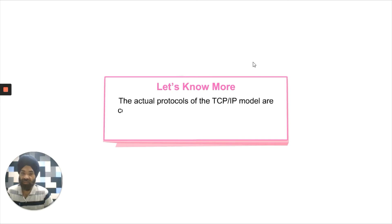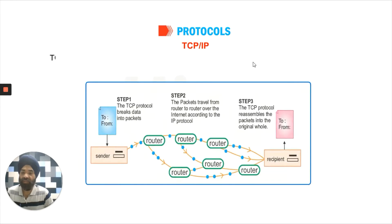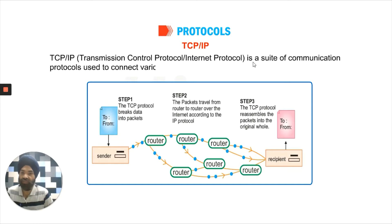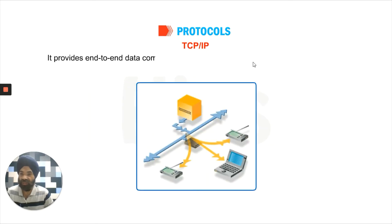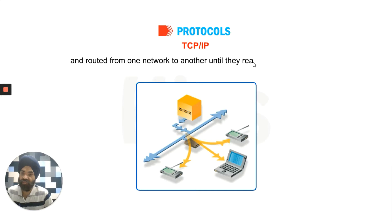The actual protocols of the TCP/IP model are collectively called the Internet Protocol Suite. TCP stands for Transmission Control Protocol and IP stands for Internet Protocol. TCP/IP is a communication protocol used to connect various computers on the Internet. It provides end-to-end data communication, specifying how data should be broken into pieces called packets, transmitted and routed from one network to another until they reach the destination.